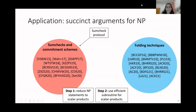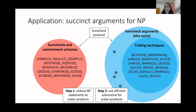Many prior works on sum-check-based succinct arguments and split-and-fold techniques get succinct arguments for NP by first reducing the NP statement to scalar products and then using efficient subroutines for scalar products. We use a similar strategy by constructing a sum-check argument for scalar products over bilinear modules and then reducing NP statements to this scalar product statement.